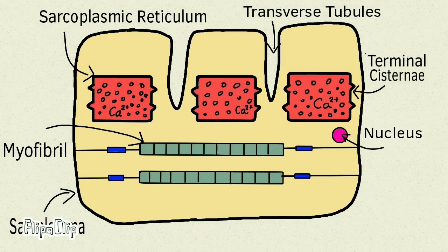Apart from these, there is obviously a nucleus that is present, some mitochondria because the muscles obviously need a lot of energy for working, and there are also myoglobins that are present which provide oxygen to this muscle fiber.